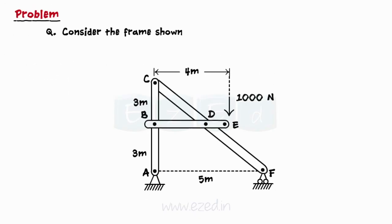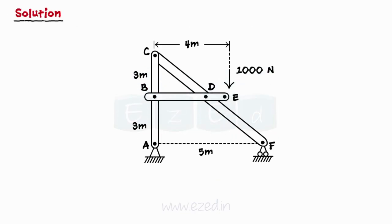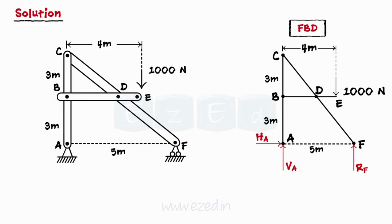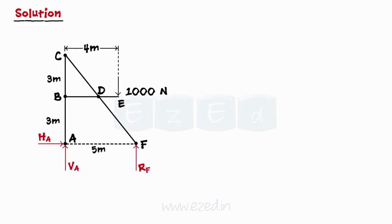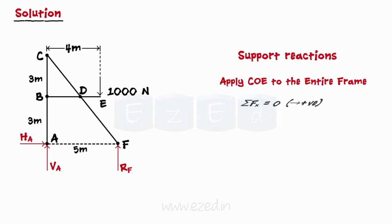Consider the frame shown alongside. Compute reactions at pin-connected joints B, C, and D. In this case, we only have to find pin reactions at B, C, and D. We will first draw the free body diagram of the entire frame and find the support reactions. Applying conditions of equilibrium, we first equate the summation of all forces in the x-direction to zero, giving us the horizontal component of the reaction at support A equal to zero.